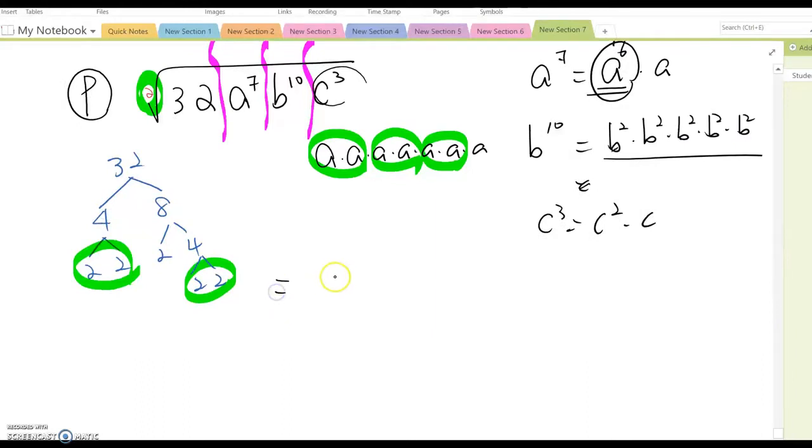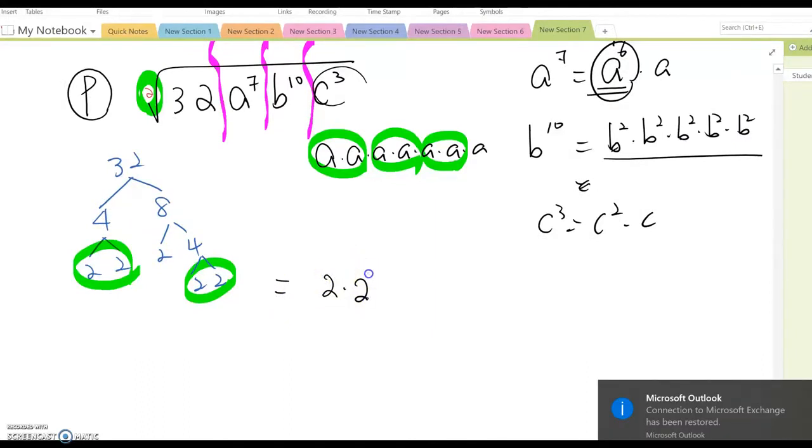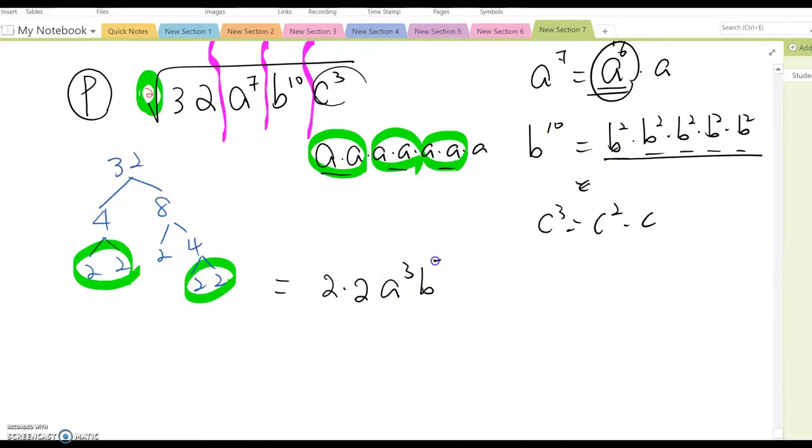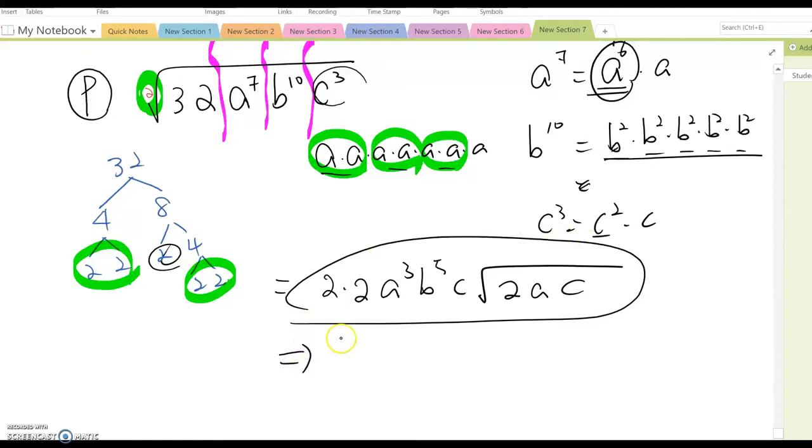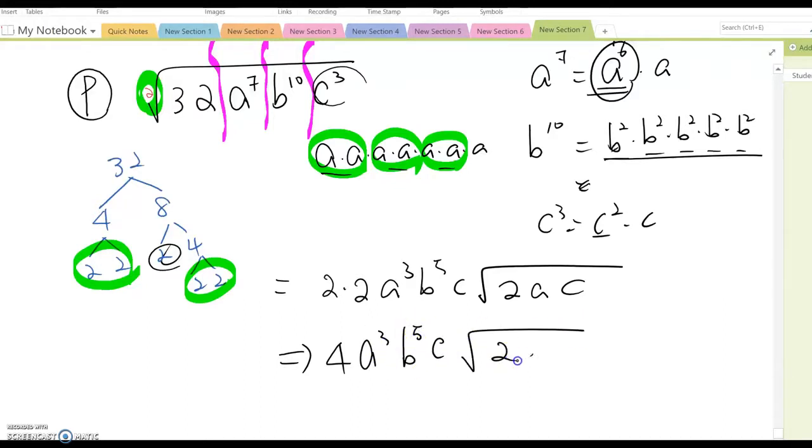The answer becomes 2 times 2 times a cubed times b to the fifth times c, and then the leftover becomes 2, a, and c. That is the answer. Simplify: 4 a cubed b to the fifth c square root of 2ac. That can be our final answer.